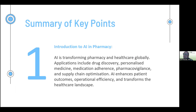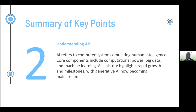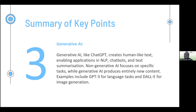One: AI is transforming pharmacy and healthcare globally. Applications include drug discovery, personalized medicine, medication adherence, pharmacovigilance and supply chain optimization. AI enhances patient outcomes, operational efficiency and transforms the health landscape. Two: AI refers to computer systems emulating human intelligence. Core components include computational power, big data and machine learning. AI's history highlights rapid growth and milestones with generative AI now becoming mainstream. Three: Generative AI like GPT-3 creates human-like text, enabling applications in NLP, chatbots and text summarization. Non-generative AI focuses on specific tasks while generative AI produces entirely new content. Examples include GPT-3 for language tasks and DALL-E for image generation.